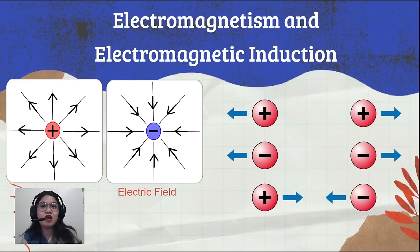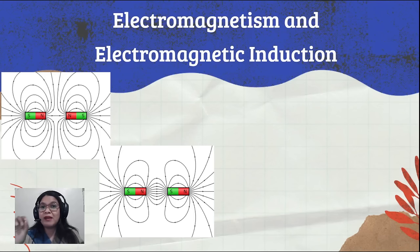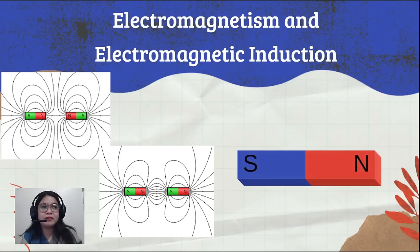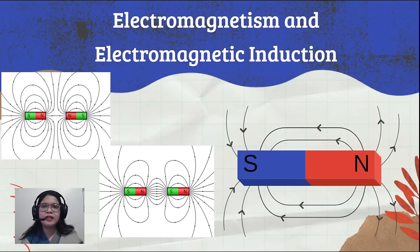Similarly for magnets, we have almost the same rules, but instead of positive and negative charges, we have north and south poles. There are also magnetic field lines surrounding the magnets on their poles. The magnets always have a north and a south pole, and the magnetic field lines come out from the north pole going to the south pole.